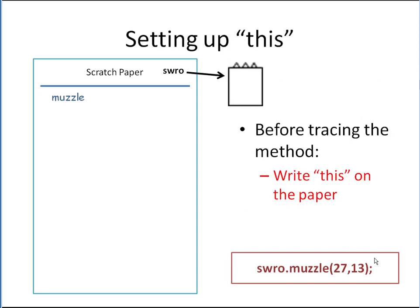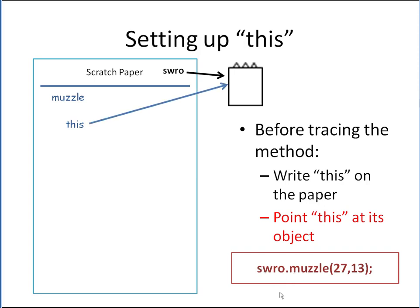Next, we're going to write the word 'this' on our paper and we're going to point 'this' to whatever object ran this method. In this case we have SWRO.muzzle, so whatever comes before the dot — that's 'this' — so we're going to point that arrow there.